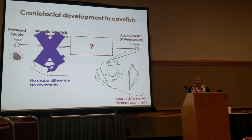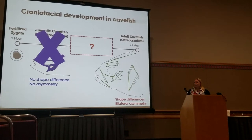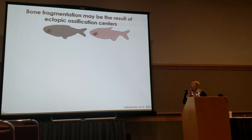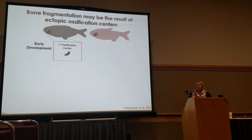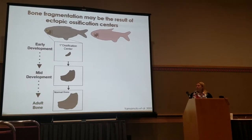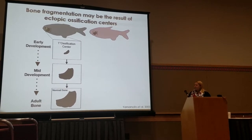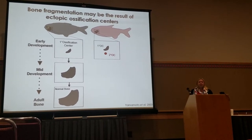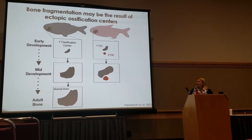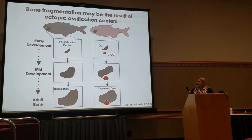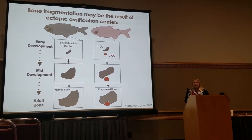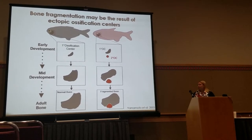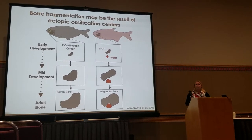We wanted to know what's going on during ossification of these bones. We focused on just one bone — my favorite, the SO3 bone that fragments. We hypothesized that surface fish would start with a single ossification center that would grow out and become a normal bone. Based on evidence from a 2003 paper from Bill Jeffery's group, we thought we might see secondary or ectopic ossification centers that pop up in cave fish, never fully fusing into the larger element, resulting in a fragmented bone.